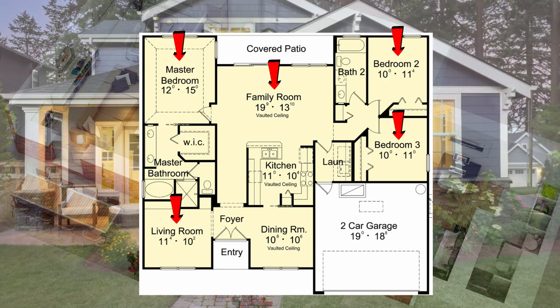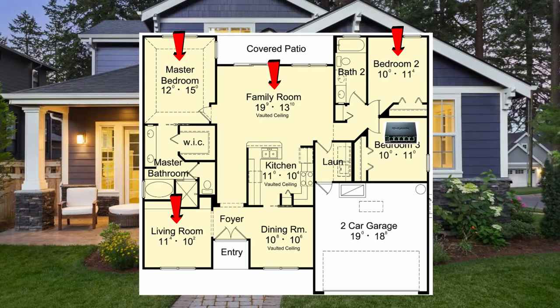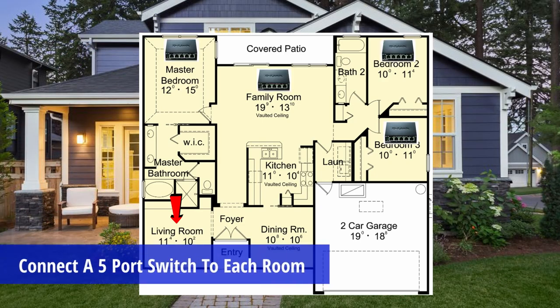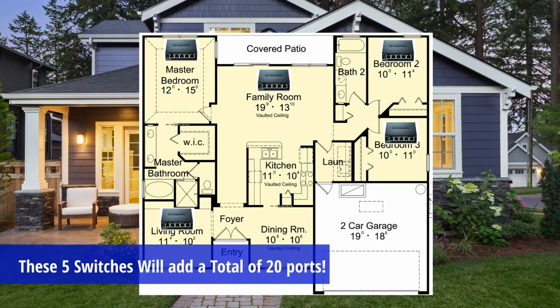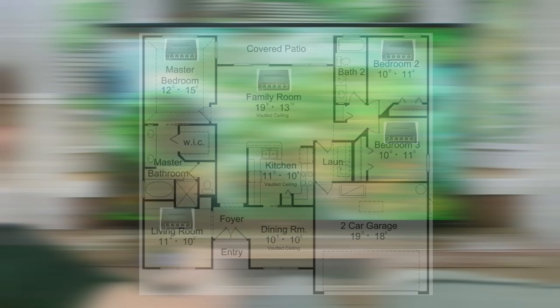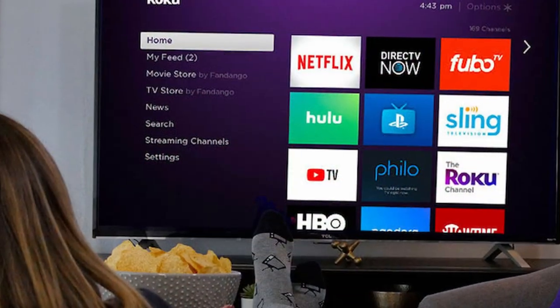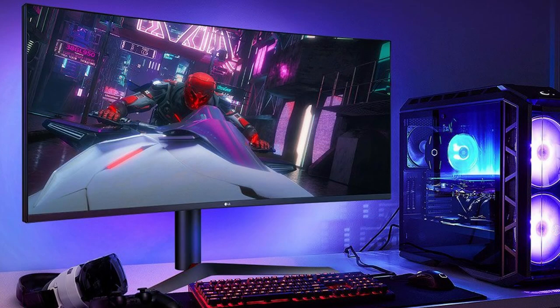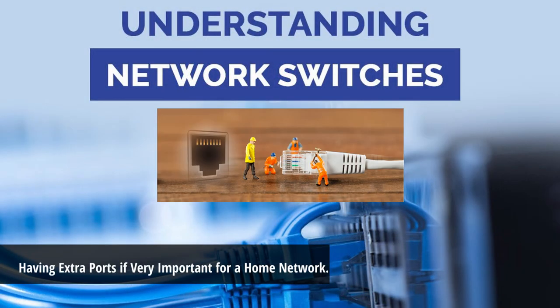To optimize this ethernet cable connection, you should connect a five-port switch to each room. By doing so, this will give you four more ports per room. Those four extra ports will allow four more devices — like TVs, streaming devices, gaming consoles, another PC — and the list can go on and on. So you can see why it's important to have extra ports in each room.